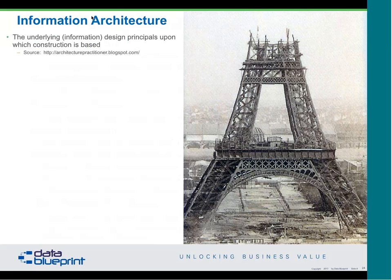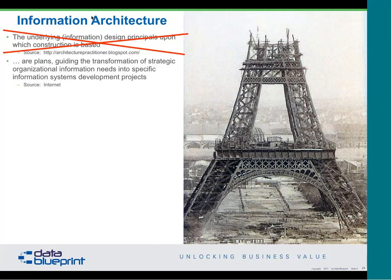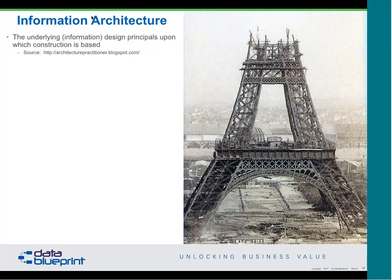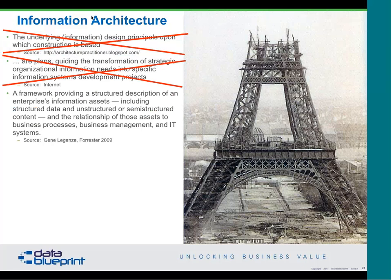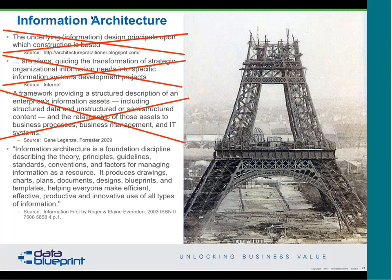I've had many friends over the years give me definitions of information architecture, and I hate them all. Imagine an elevator pitch where the boss says: 'You're an information architect — what do you do?' If you say 'I develop the underlying information design principles upon which construction is based,' it's hard to see the business value. If you say 'I make plans guiding the transformation of strategic information needs into specific system development projects' — it might be correct, but it's usually not true. Another definition: 'I provide a framework for structured description of an information asset' — correct, but you've lost the executive.